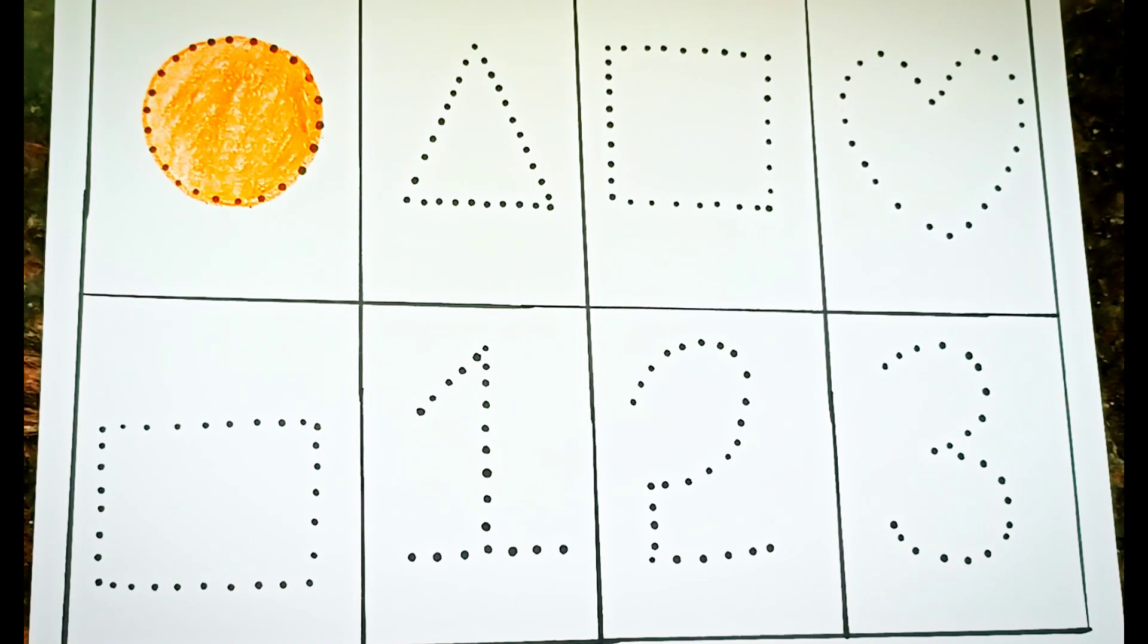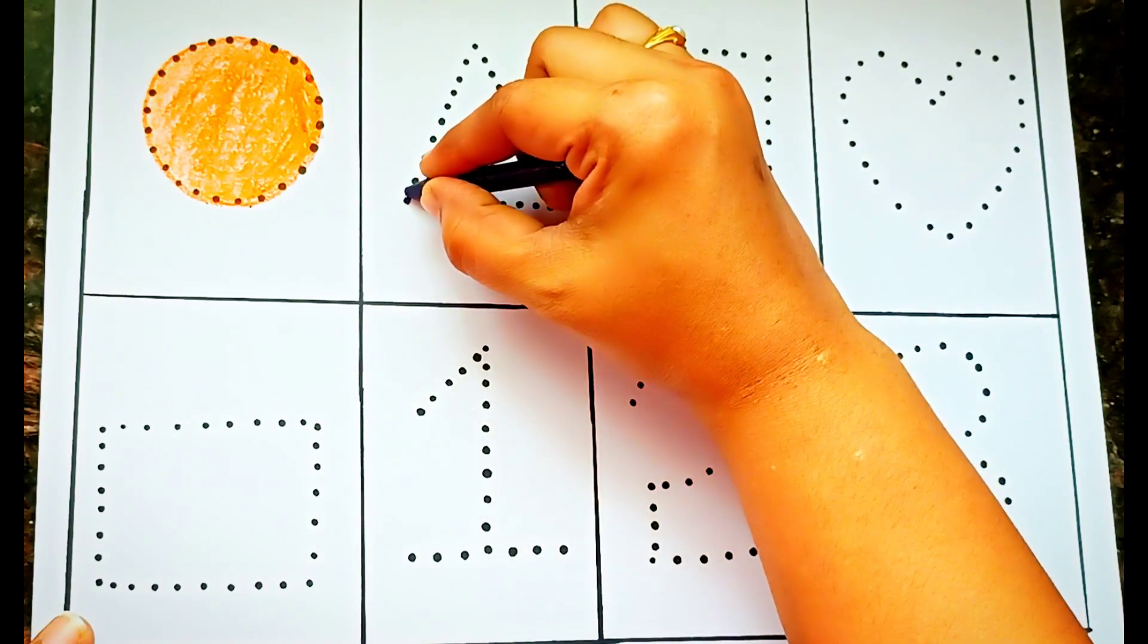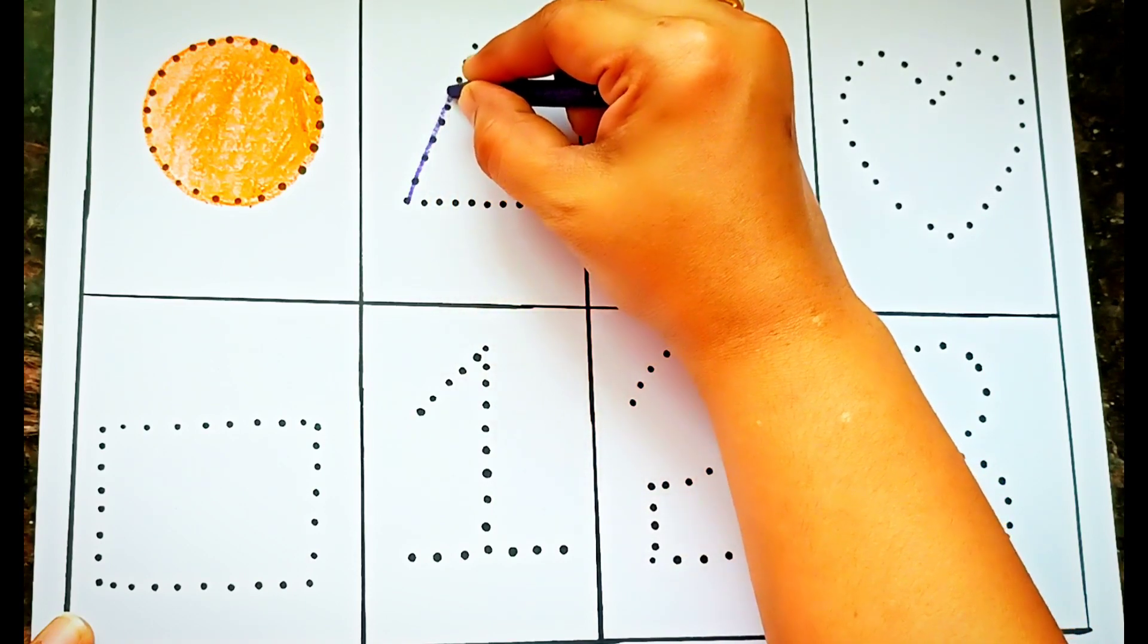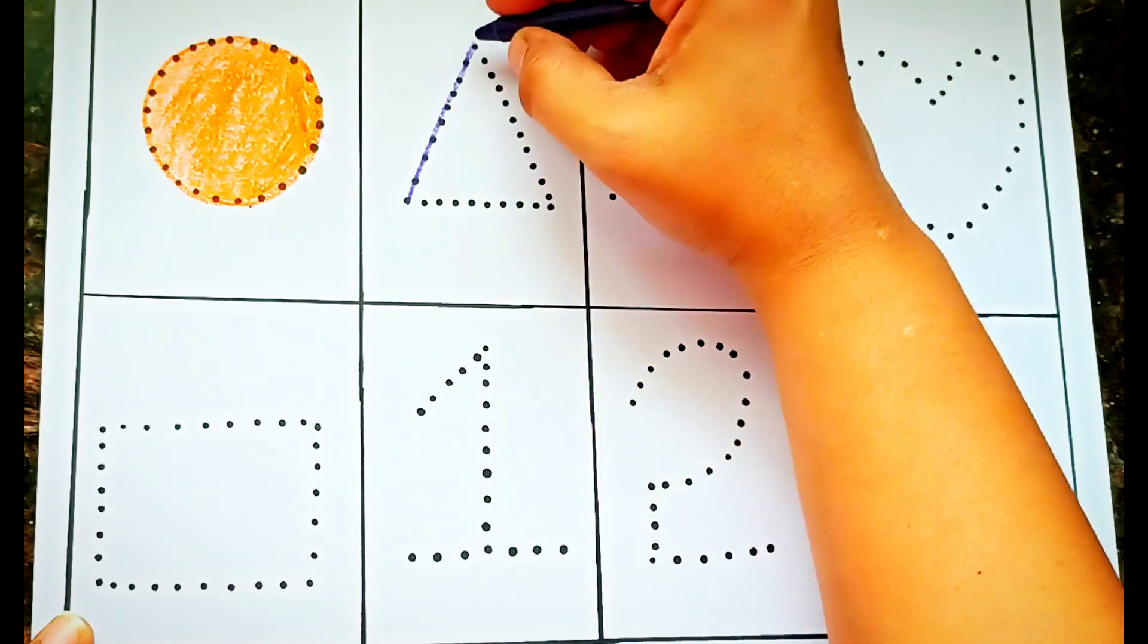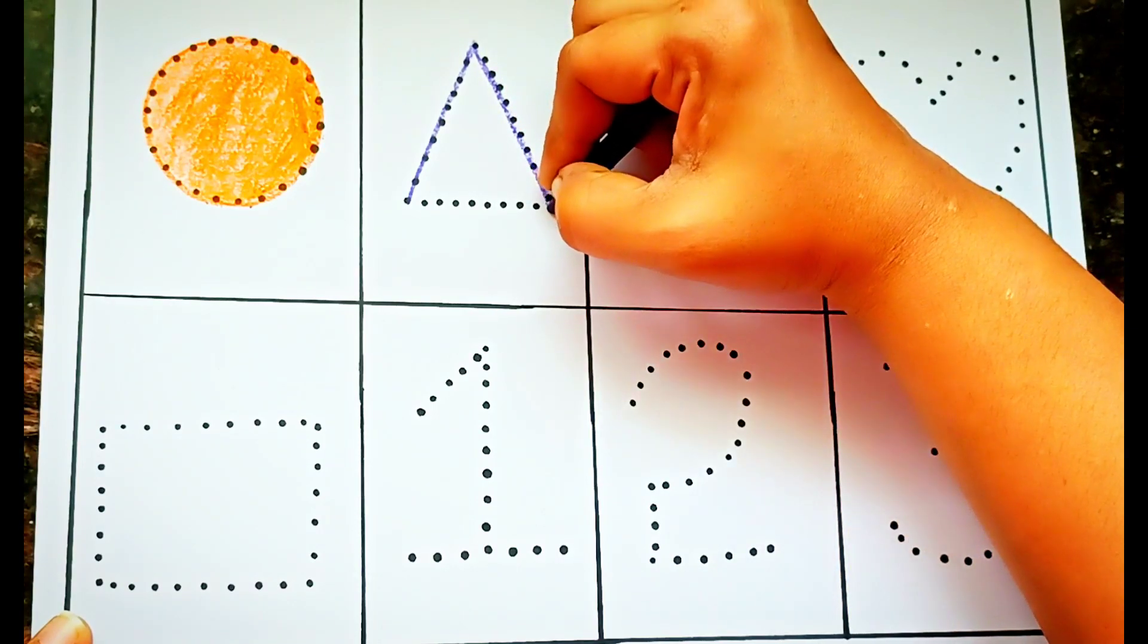Next, this is a triangle. Let us draw a triangle in violet color.